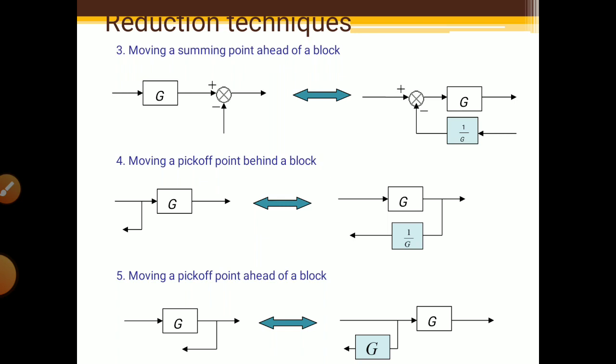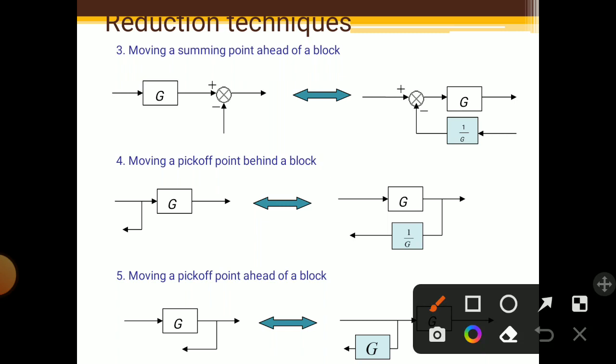Another rule is moving a summing point ahead of a block. When moving a summing point ahead of block G, you can shift it, but you have to add the reciprocal of the block in parallel. Suppose you are crossing block G — then you have to add 1 upon G as an extra block. This is the rule for moving a summing point ahead of a block.